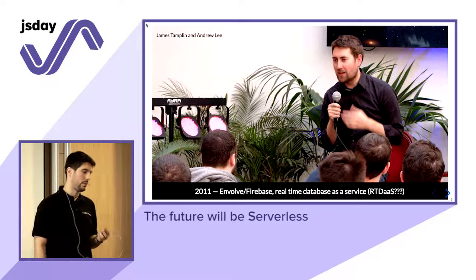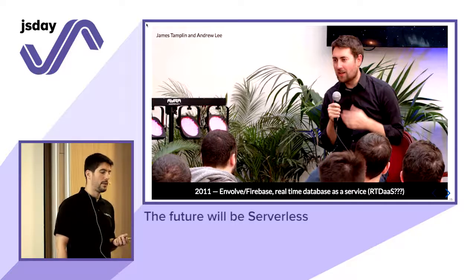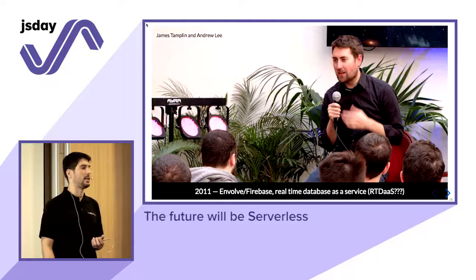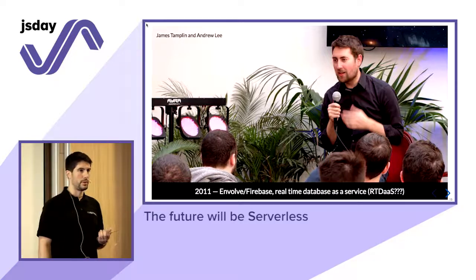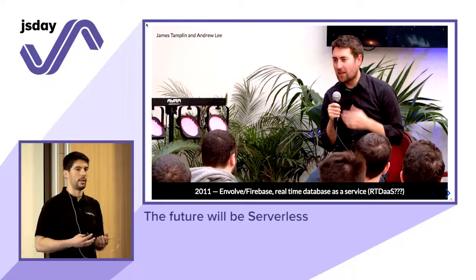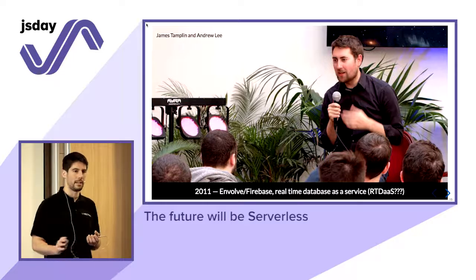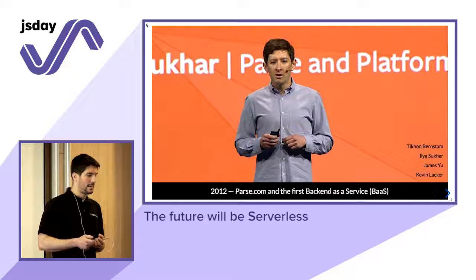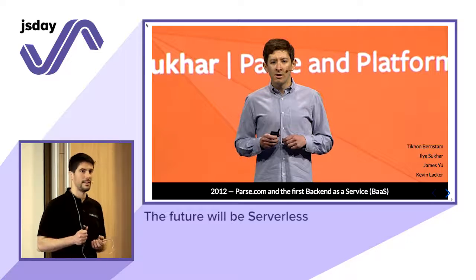Then in 2011 there was another great invention — initially called Envolve and then Firebase. The idea was: we can virtualize processing power, but why not give databases as a service? Specifically, a real-time database where you can get push notifications every time there is a change. This turned out to be very successful. Google acquired it and built even more backend capabilities on top of it. Nobody ever coined a term like 'database as a service,' but I think that should be a thing.